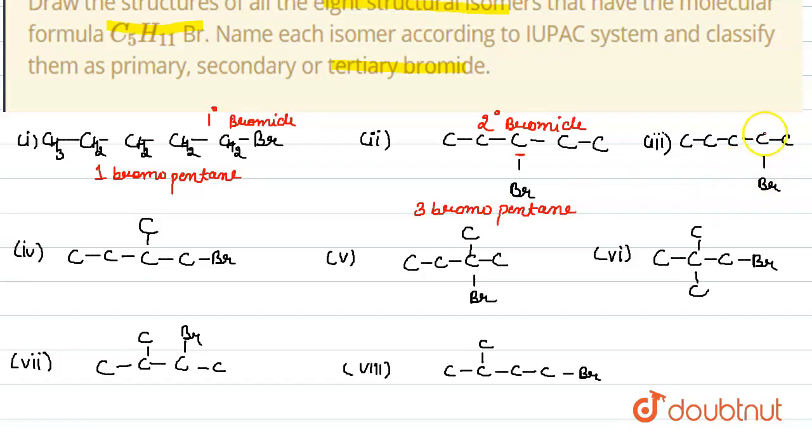Next is here bromine is attached to the carbon which is attached to further two carbons. That's why it is secondary bromide. And its name will be 2-bromo-pentane.